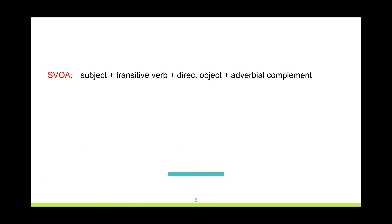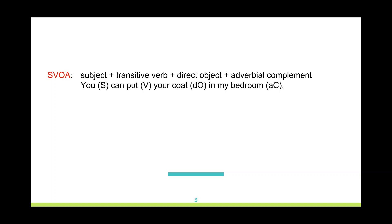The sixth basic structure could include a subject, a transitive verb, a direct object, and an adverbial complement. Look at the example: 'you' — the subject — 'can put' — the verb phrase — 'your coat' — direct object — 'in my bedroom' — adverbial complement. Always pay attention to the difference between the form of these components and the role they perform in such structures.